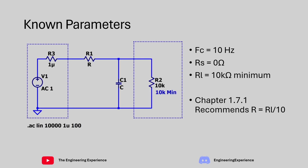From the known parameters and our understanding of low-pass filters, we can draw the circuit. We have a voltage source — I've set this as 1 micro-ohm just to show a source impedance in the circuit, but it's effectively 0 ohms. Then we have a series resistive component, a parallel capacitive component, and the load resistance. As recommended by the book, we're setting the resistance to 1 kOhm, which is a tenth of the load impedance. We don't need to worry about the source side, as we have a perfect source with 0 ohm impedance.